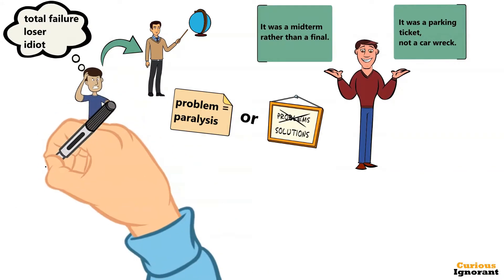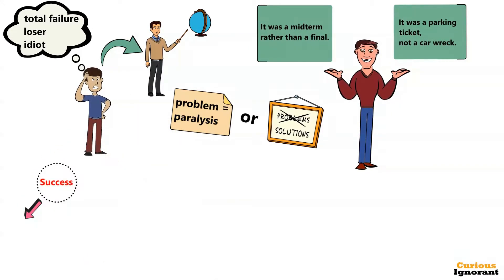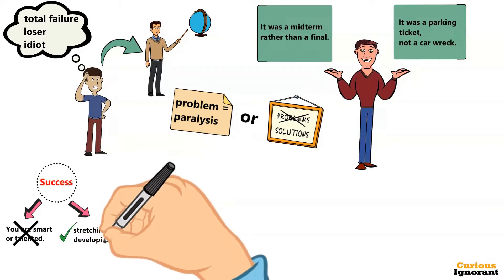In one world, the world of fixed traits, success is about proving you are smart or talented. In another world, the world of changing qualities, it's about stretching yourself and developing your skills by learning something new.